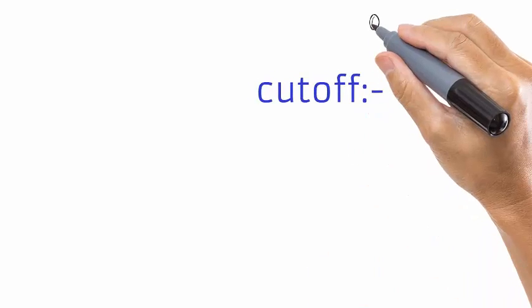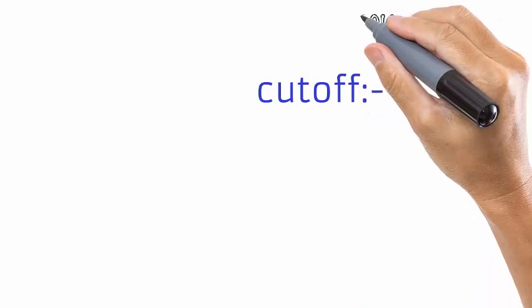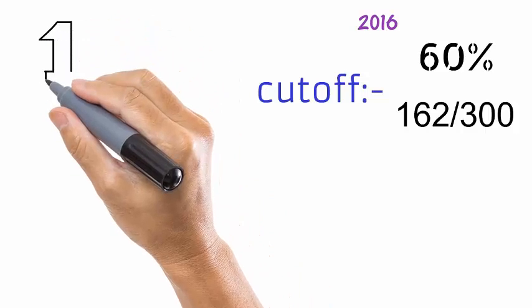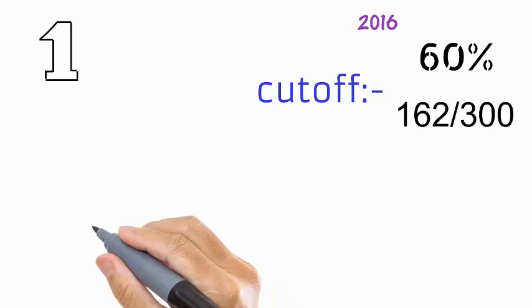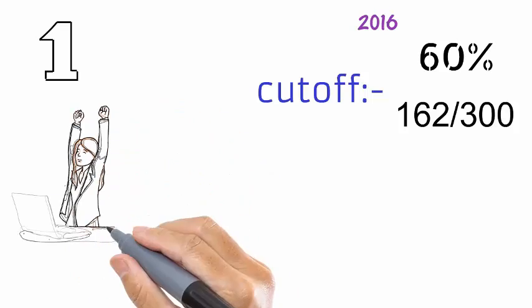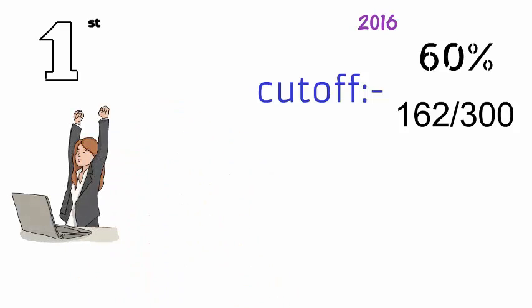Others can skip it. If we talk about cut-off — in 2016, cut-off was around 60%. In my set, cut-off was 162 out of 300. Remember, even the first rank in BARC written exam doesn't guarantee your final selection. Keep in mind, more than 50% of questions will be easy and you will easily handle them.